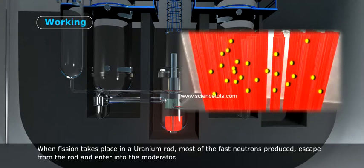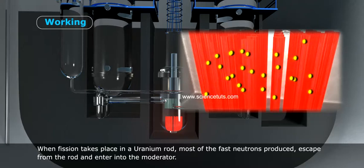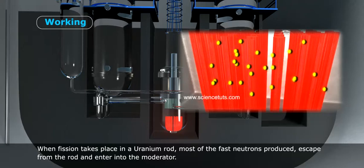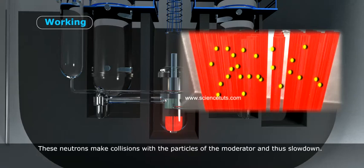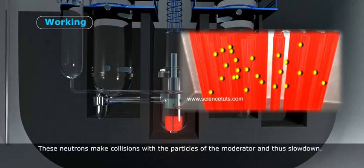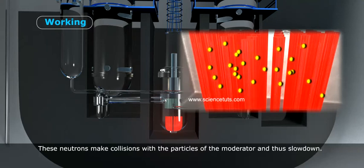These neutrons make collisions with the particles of the moderator and thus slow down. About 25 collisions with deuterium are sufficient to slow down a neutron's energy from 2 MeV to thermal energies.